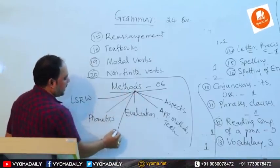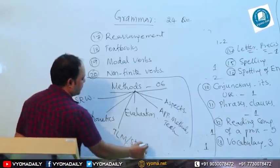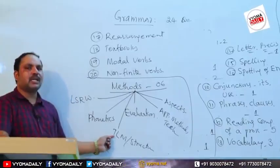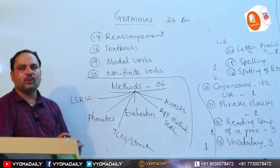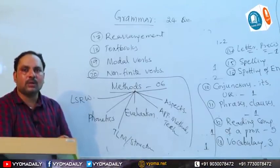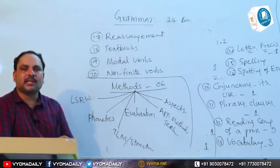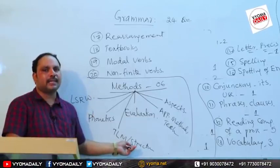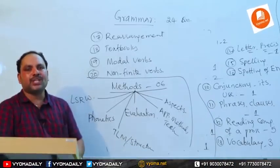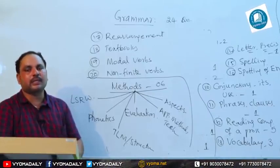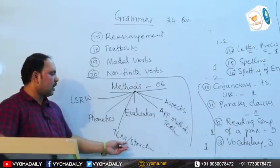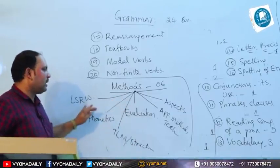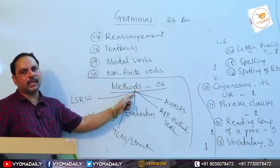The sixth area is TLM — Teaching Learning Materials, including audio aids, visual aids, audio-visual aids, use of ICT in the classroom, and Computer Assisted Language Learning (CALL). A question may also be asked on the teaching of vocabulary — different types and techniques — and on different types of grammars and methods of teaching grammar.